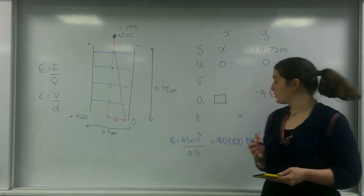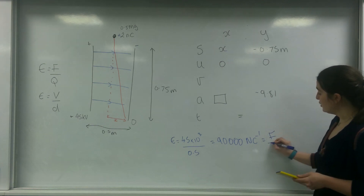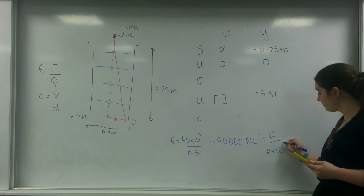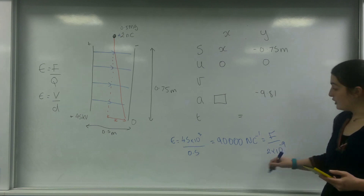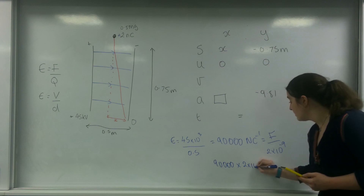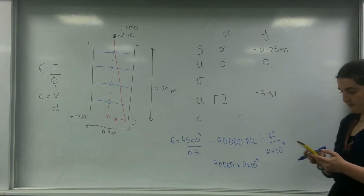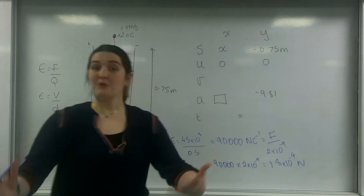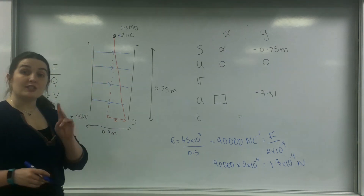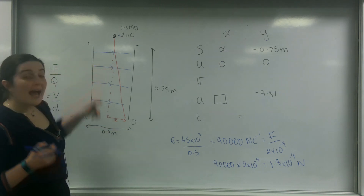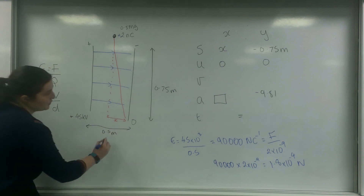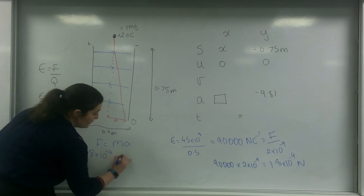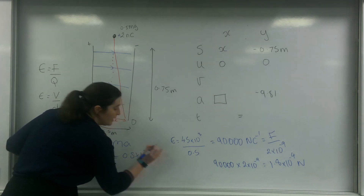Now I'm going to find the force. I know that my field strength of 90,000 also equals force divided by the charge, and my charge is 2 nanocoulombs. So my force is going to be 90,000 times 2 times 10 to the minus 9, which equals 1.8 times 10 to the minus 4 newtons. I'm going to use Newton's second law to work out my acceleration, since the motion and force are in the same direction. So F equals MA: 1.8 times 10 to the minus 4 equals 0.5 times 10 to the minus 3 times A.